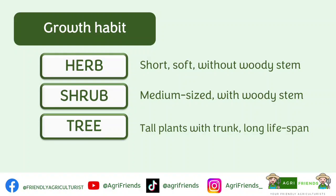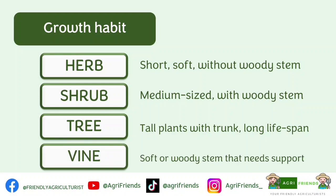Trees normally have a lifespan of more than two years. Fourth are vines. Vines are plants without self-supporting stems since their stems are either soft or woody, but thin, long, and weak — so they need external support. Usually, these plants have specialized structures that help them grow vertically, called tendrils.